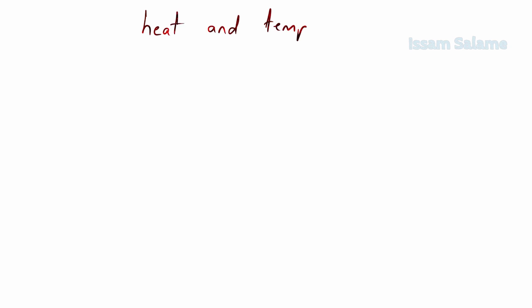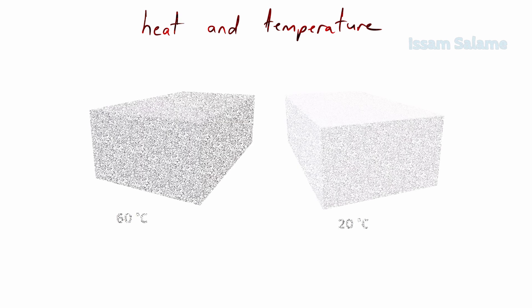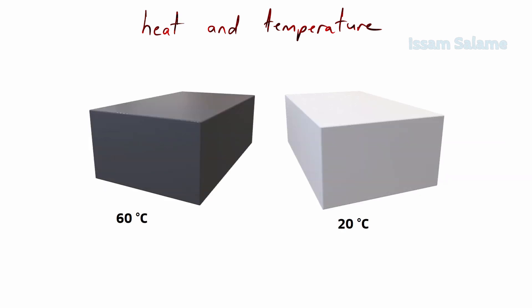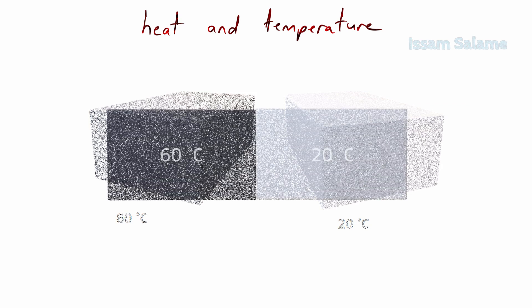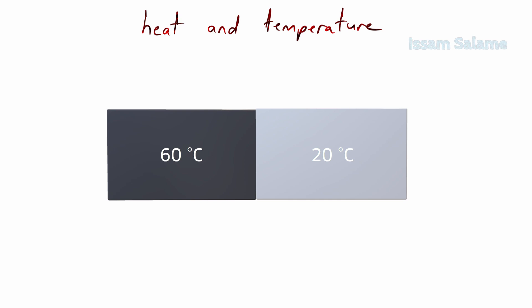To understand the difference between heat and temperature, I will give you an example. If we have two blocks of iron, one is at 60 degrees Celsius and one is at 20 degrees Celsius, and then we place them next to each other, what do you think would happen?